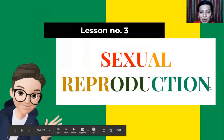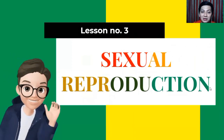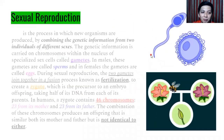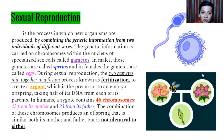For lesson number three, we are going to talk about sexual reproduction, meaning the involvement of sex cells. In sexual reproduction, we have the sperm cells and the egg cells — the female part and the male part. It involves the gametes. This is the process in which new organisms are produced by combining the genetic information from two individuals of different sexes. The genetic information is carried on chromosomes within the nucleus of specialized sex cells called gametes.